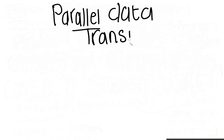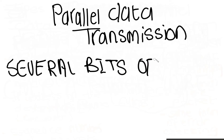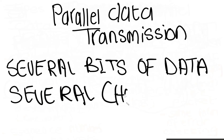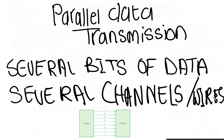Parallel data transmission occurs when several bits of data, usually one byte, are sent down several channels or wires all at the same time. Each channel wire transmits one bit. Parallel data transmission works well over short distances. Over longer distances, for example over 20 meters, data can become skewed.